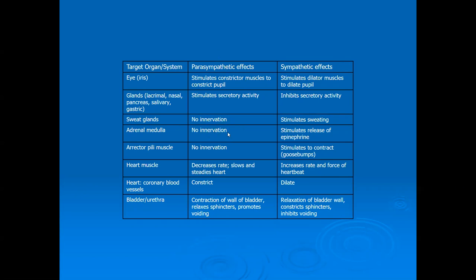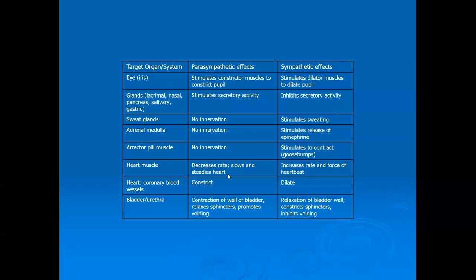Similarly, there's no parasympathetic innervation to sweat glands — we just don't tell them to sweat and they stop. The same applies to the erector pili muscles. For the heart, however, remember Hank said our heart likes to gallop along at about 100 beats per minute on its own — we keep it down around 60 to 70 beats per minute because the vagus nerve is always sending parasympathetic signals to decrease the heart rate and keep it slow and steady.